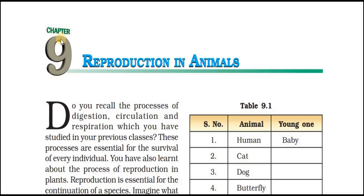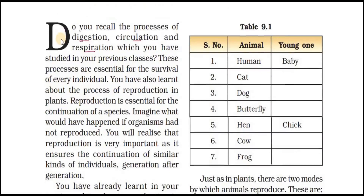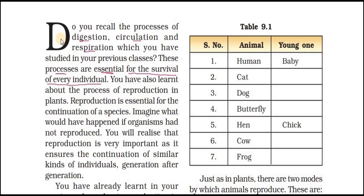Let us start a very interesting chapter called reproduction in animals. In earlier topics we covered the process of digestion, circulation, and respiration in previous classes, and we know that these processes are essential — necessary for the survival of every individual. We have also learned about the process of reproduction in plants, and we know that reproduction is essential for the continuation of a species.